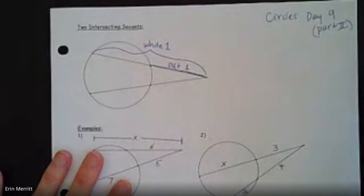The outer piece of the second one, let's do the same thing here. So outside part number 2, and then the entire thing we're going to refer to as the whole segment, or the whole secant part 2.